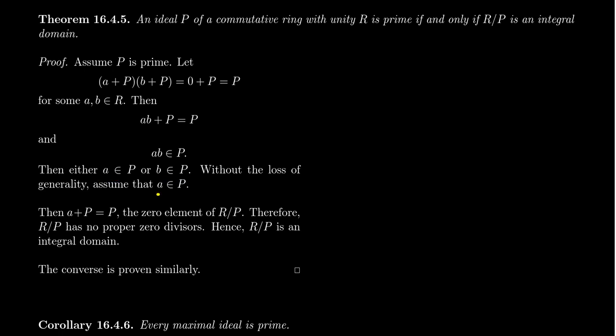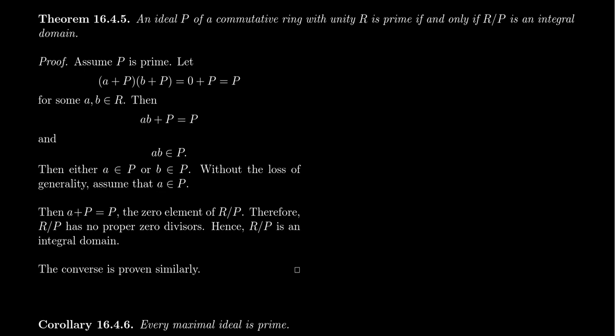Without the loss of generality, let's just say it's A. It's commutative multiplication. It doesn't matter the order here. So we're assuming that A plus P equals P. This is the zero element of R mod P. And so when you have this product right here, it's like, here's the zero element. We have a product equal to zero. Well, one of the factors is equal to zero.